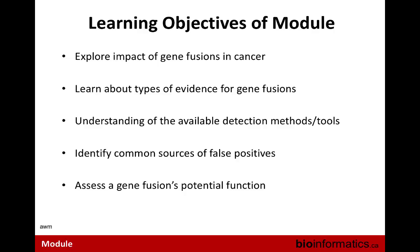We have a few learning objectives on fusions. We want to explore the impact of gene fusions in cancer, learn about the different types of evidence for gene fusions, and understand the available detection methods and bioinformatics tools. It's a messy, challenging problem — you can find important cancer fusions, but you can also end up with lots of artifacts. Dealing with false positives is one of the big challenges. We also want to assess a gene fusion's potential function and how it might contribute to tumorigenesis.